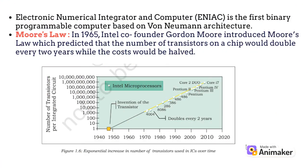ENIAC is the first binary programmable computer based on von Neumann architecture. After the von Neumann architecture, we will now discuss Moore's law.